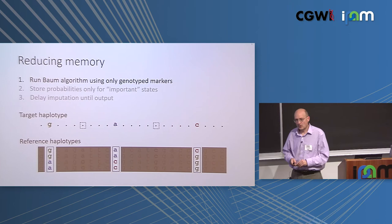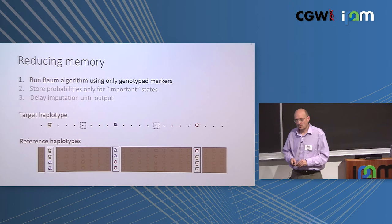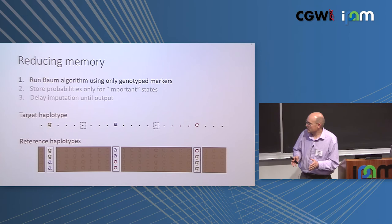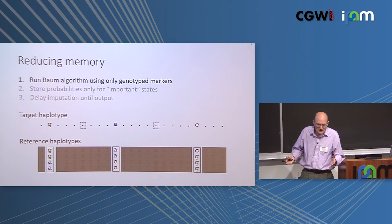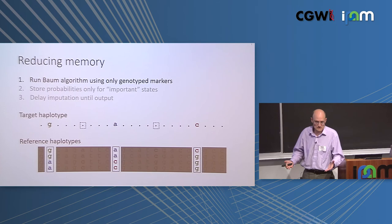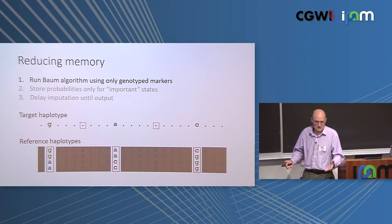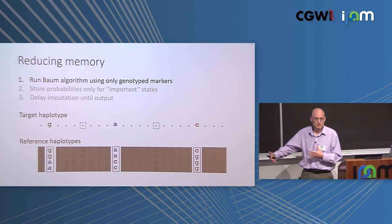Here are three techniques to reduce memory. First, introduced in Beagle 4.1: run the Baum algorithm using only the genotype markers, masking out everything not genotyped. In real data this saves 99 to 99.9% of the states you have to store probabilities for. For a really large reference panel, this is a three-orders-of-magnitude improvement in both memory and computation.